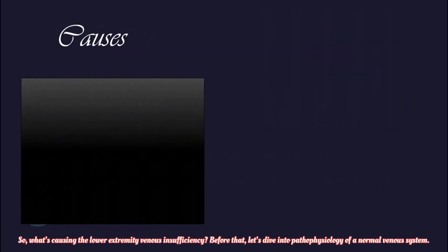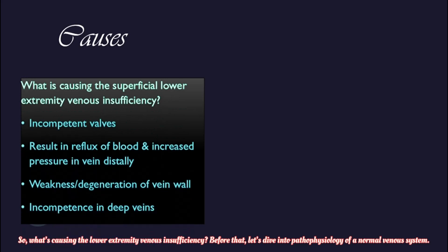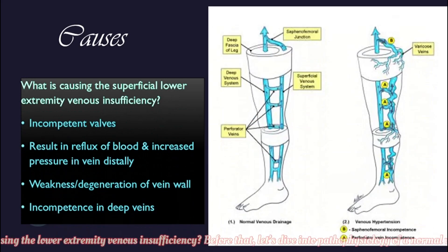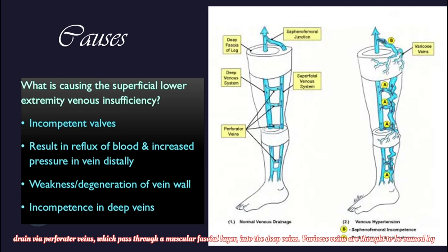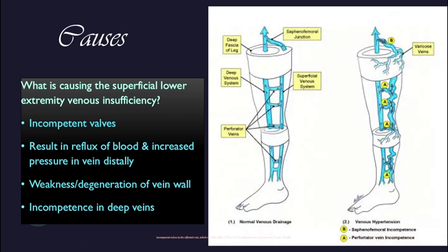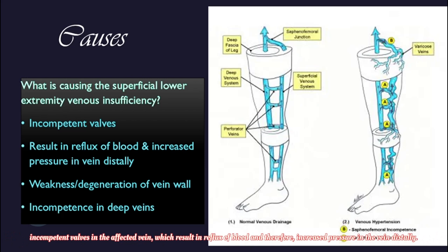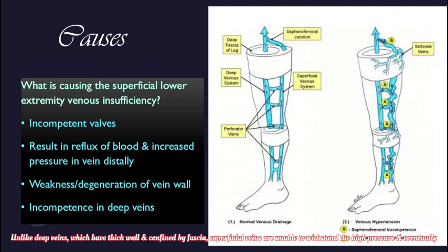What's causing lower extremity venous insufficiency? Let's dive into the pathophysiology of a normal venous system. Blood from superficial venous capillaries is directed upward via one-way valves into the superficial veins, which then drain via the perforator veins through a muscular fascial layer into the deep veins. Varicose veins are thought to be caused by incompetent valves in the affected vein, which results in reflux of blood and therefore increased pressure in the vein distally.